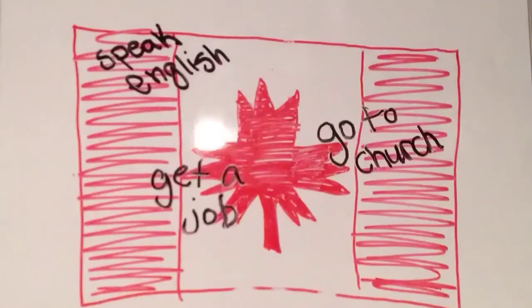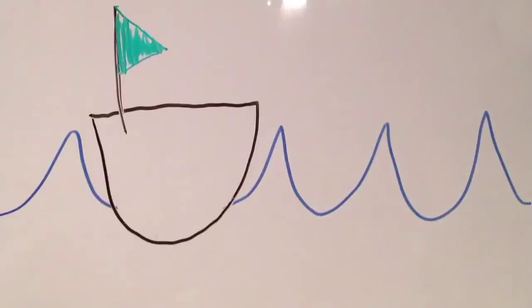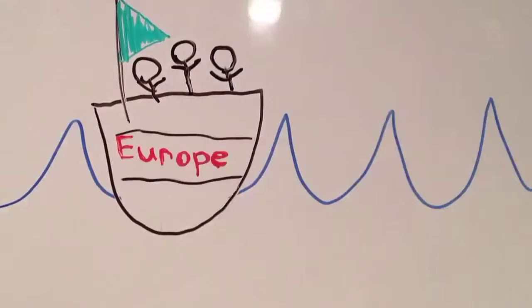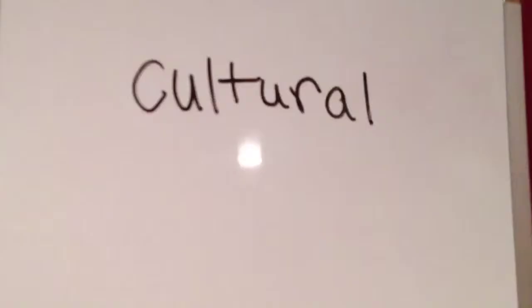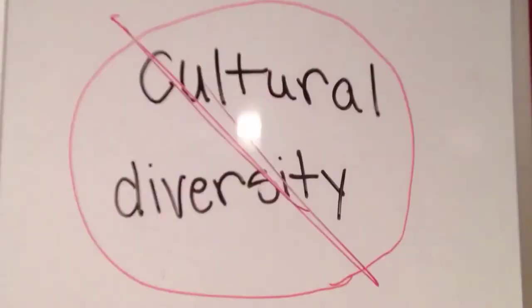At the time, the government thought they were helping the Aboriginals by teaching them a new way of life. When the Europeans came over, the Canadian government assimilated the native children. This did not display cultural diversity or protect their culture by any means.